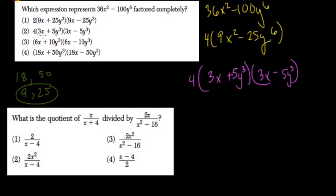So we have 3x plus 5y to the third, 3x minus 5y to the third times 4. It's choice 2.